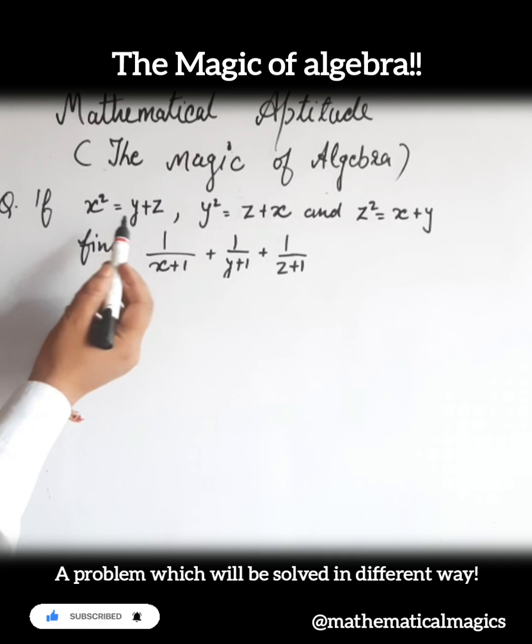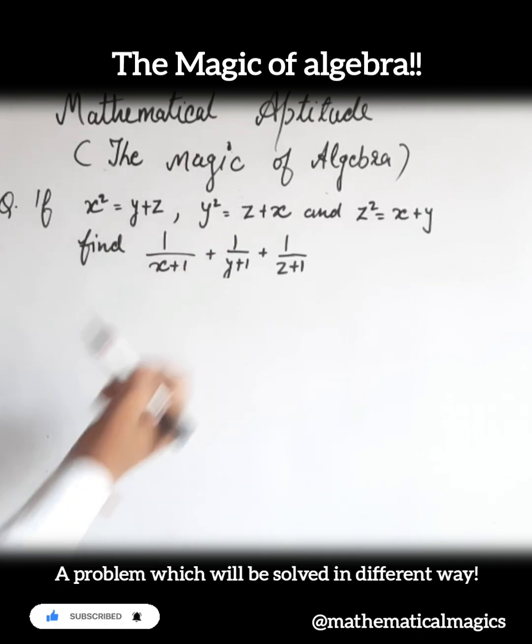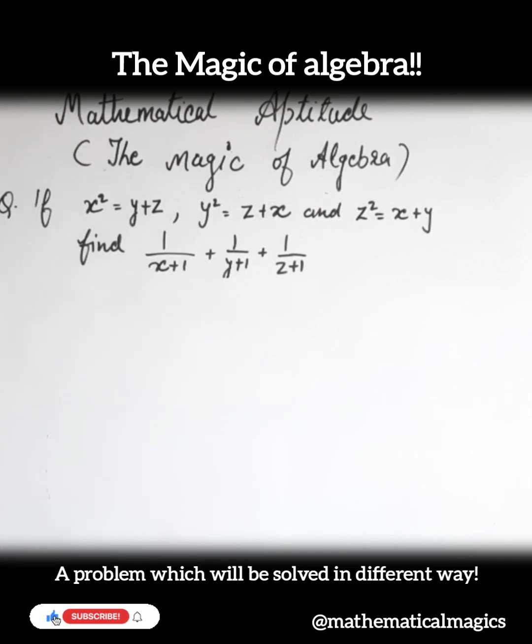The question is, if x square is equal to y plus z, y square is equal to z plus x and z square is equal to x plus y, find 1 upon x plus 1 plus 1 upon y plus 1 plus 1 upon z plus 1.